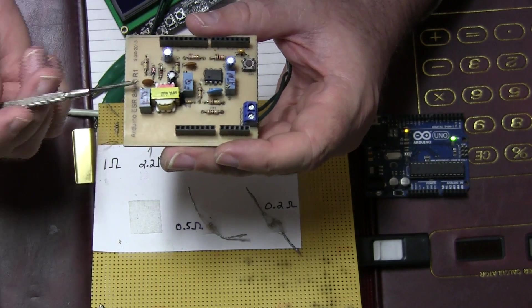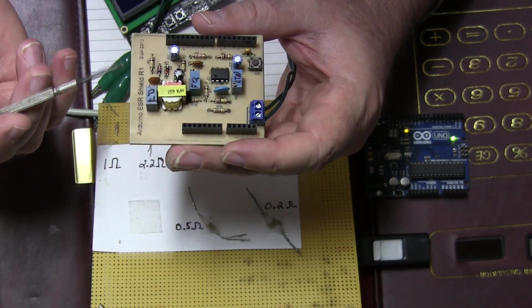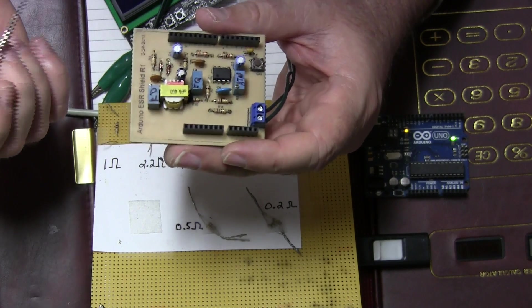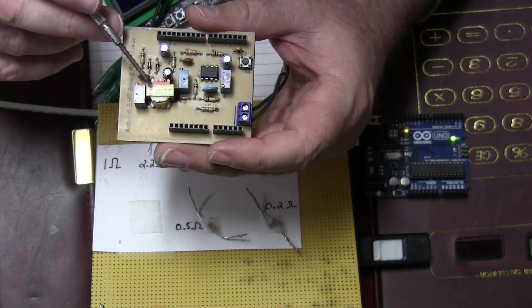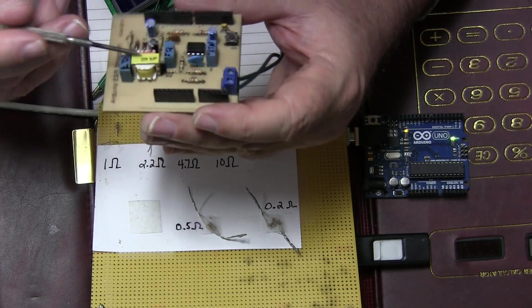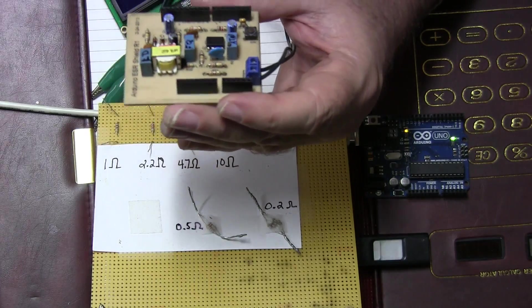Other than that it just has 3 electrolytics, a couple of ceramics, a couple of diodes and some resistors. So it's a really simple circuit. Once you find a transformer, I found this transformer out of an old power supply that I just slapped in there. It works pretty slick.